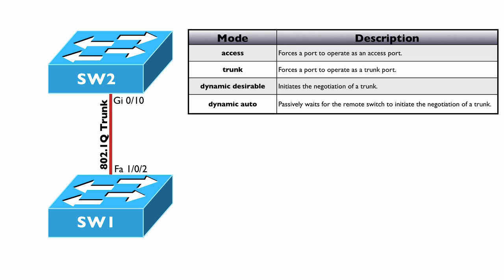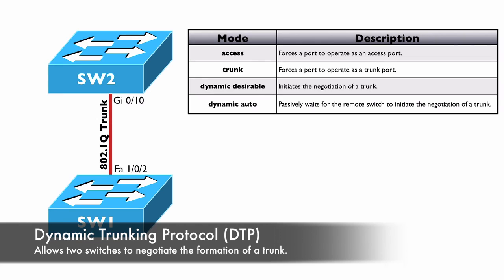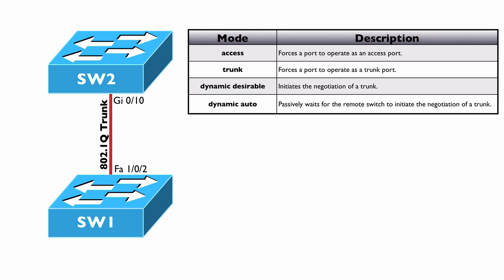We are sending out Dynamic Trunking Protocol, or DTP, frames to the far end of this link. We're trying to negotiate the formation of a trunk. Yes, we're statically configuring ourselves as a trunk, but we're attempting to negotiate a trunk with the far side. And if that far side is a Cisco switch and it's configured to respond to DTP frames, a trunk is going to be formed. However, that trunk might not be formed if the far end is configured for no negotiate.